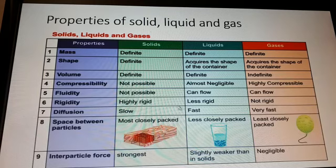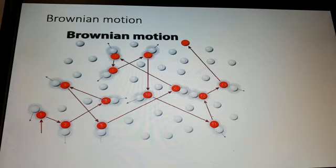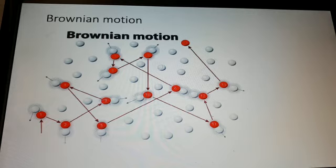Next is Brownian motion. The random motion of particles is called Brownian motion. When a suspended particle appears to be in random motion, the explanation is that it is constantly being hit by numerous fast-moving invisible particles. According to kinetic theory, these particles are invisible, fast-moving, and colliding with each other. This random molecular bombardment by other particles is called Brownian motion.